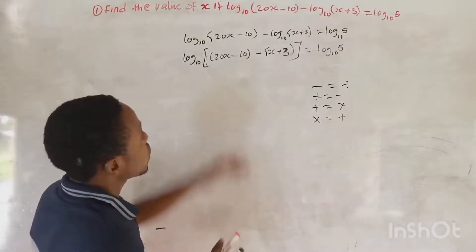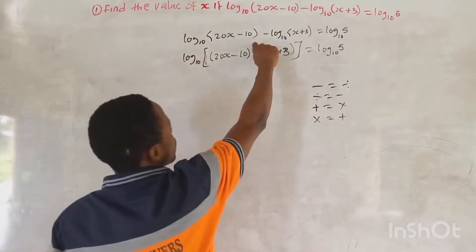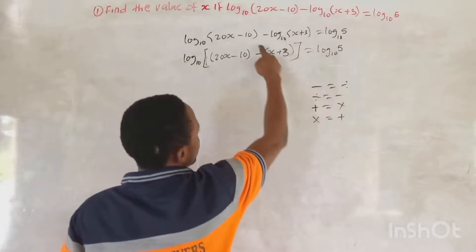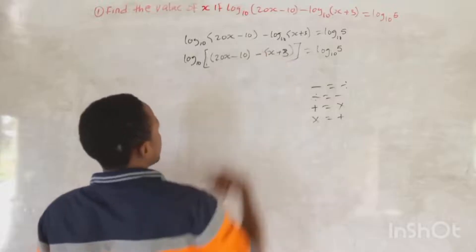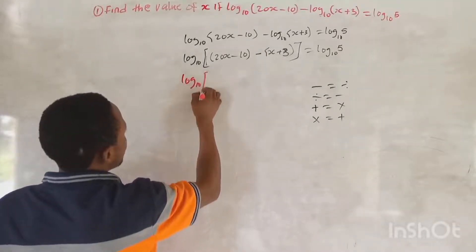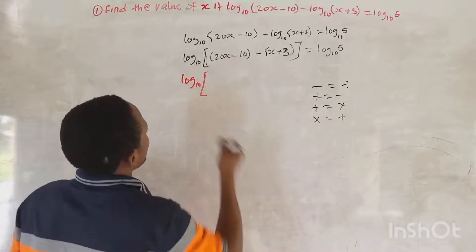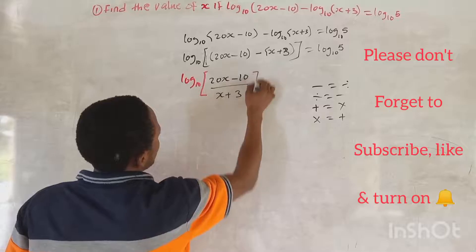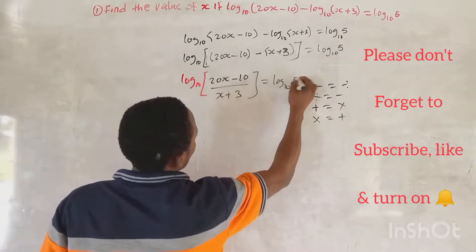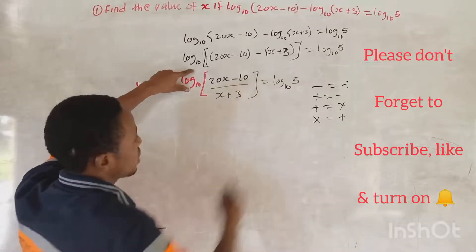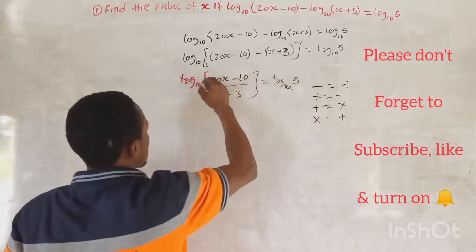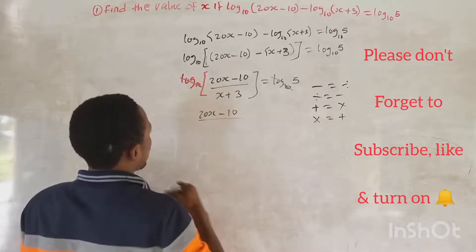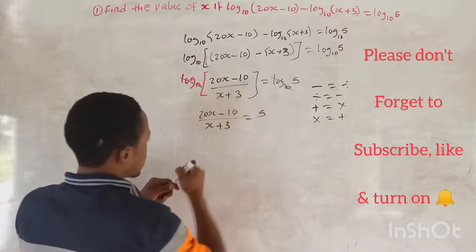So log base 10 of 5. In this place now, we apply the minus rule again — according to the laws of logarithms, division corresponds to minus. So we make this a division, giving us log base 10 of (20S minus 10) divided by (S plus 3) equals log base 10 of 5. Since log base 10 appears on both sides, we can cancel it. So we now have: 20S minus 10 over S plus 3 is equal to 5.